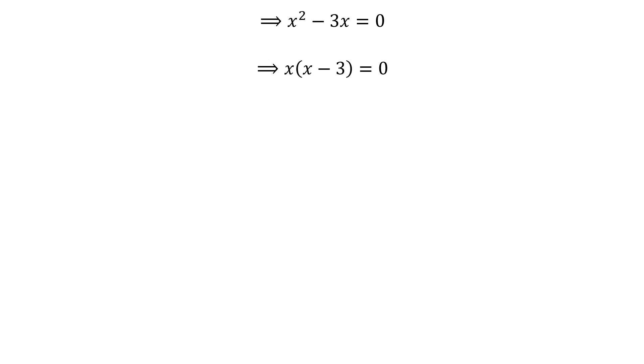Taking out the common factor x, we get x times (x minus 3) is equal to 0.